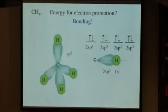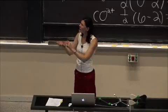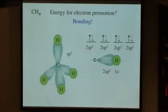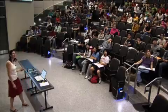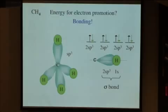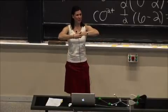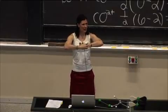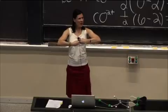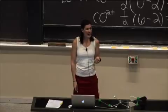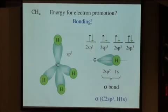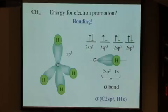To describe a bond in valence bond theory, you name the orbitals it comes from and the symmetry of the bond. The C–H bond in methane is a sigma bond because the sp3 hybrid orbital interacts directly with the 1s orbital of the hydrogen atom along the internuclear axis. Any time two orbitals come straight together along that axis, you have a sigma bond. We name it: sigma, carbon 2sp3, hydrogen 1s.